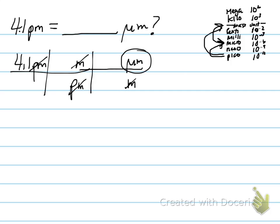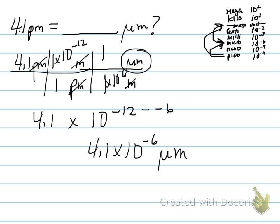Let's plug in our numbers. So, 1 picometer equals 1 times 10 to the negative 12th meters, and 1 micrometer equals 1 times 10 to the negative 6th meters. This gives us 4.1 times 10 to the negative 12th minus negative 6th, or 4.1 times 10 to the negative 6th micrometers. Not so hard once you get the hang of it. And that's about it.